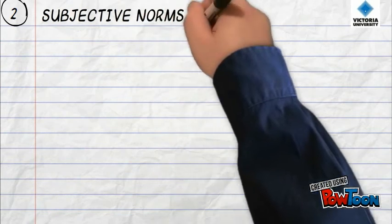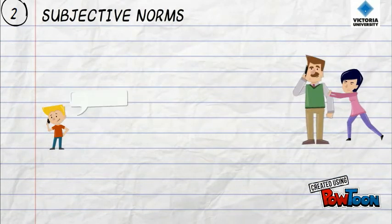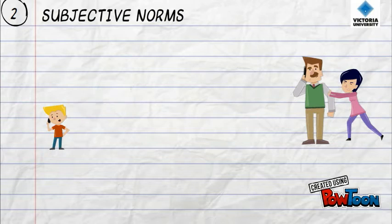Now we will look at subjective norms. This is where decisions are influenced by the individual's surroundings. As you can see the student is communicating with his parents and the decision is being influenced by them.